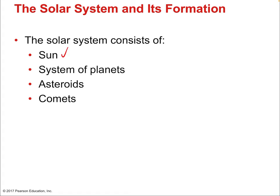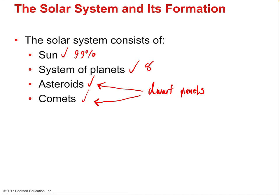We only have eight actual planets in the solar system. The sun makes up about 99% of the matter in the solar system. So the sun is, to a rounding error, the solar system itself. Everything — including our own home planet — is just a tiny leftover of the massive structure that is the sun.